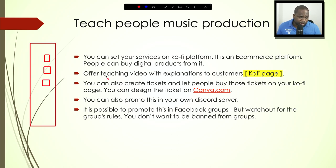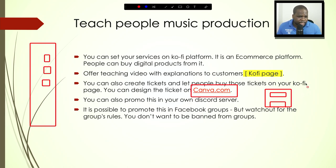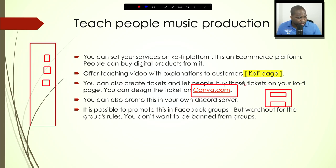Another thing you can do is create tickets for people to buy your course. You can create them with Canva.com — it's free. You put the information on the ticket, it takes like three minutes, and then you put it as a product on your Ko-fi page. When someone orders it, they technically have a digital ticket, and you need to provide the services. That's the combination you can use.